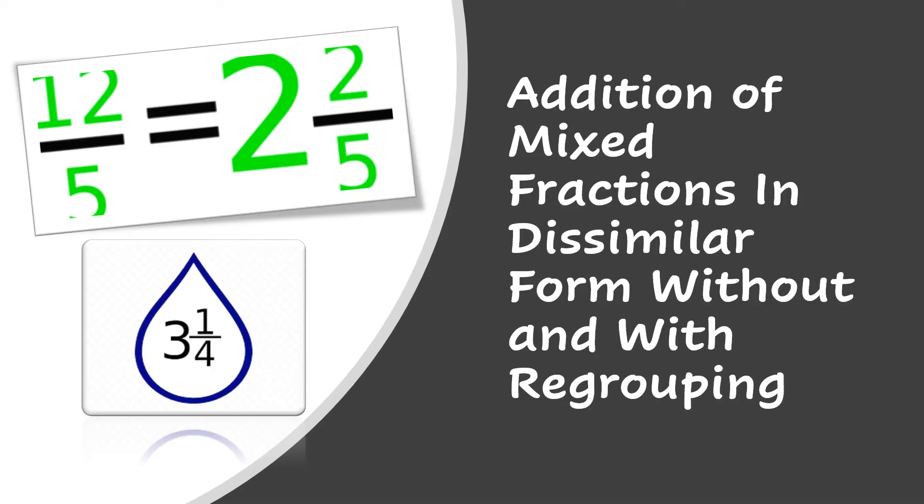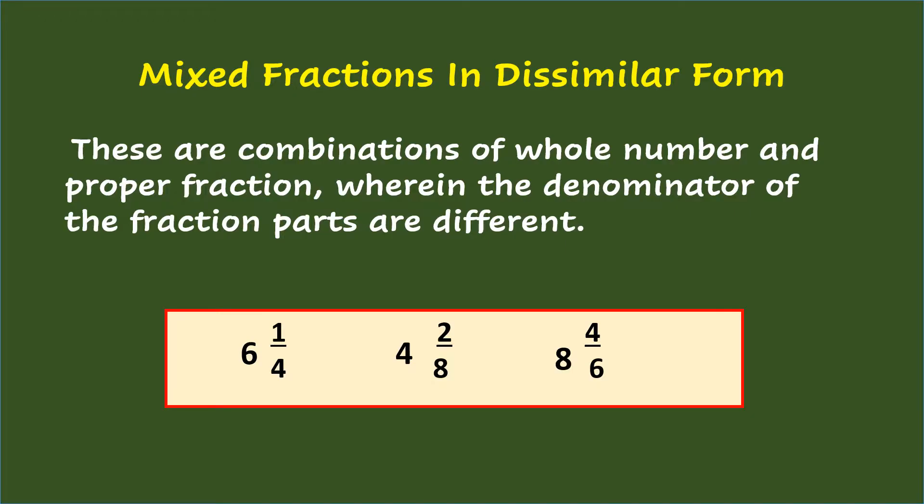Addition of Mixed Fractions in Dissimilar Form Without and With Regrouping. Mixed fractions in dissimilar form are combinations of whole number and proper fraction, wherein the denominator of the fraction parts are different. Examples: 6 and 1 fourth, 4 and 2 eighths, 8 and 4 sixths.